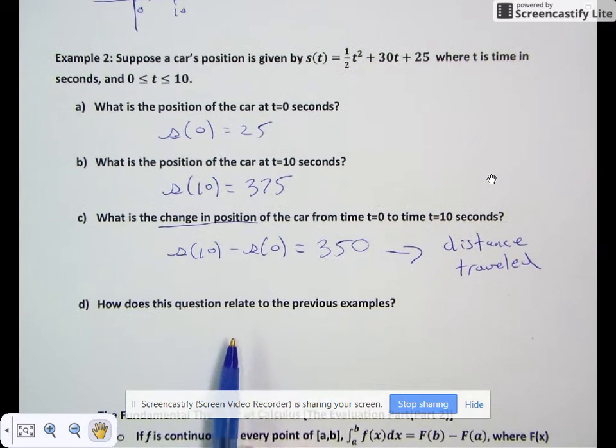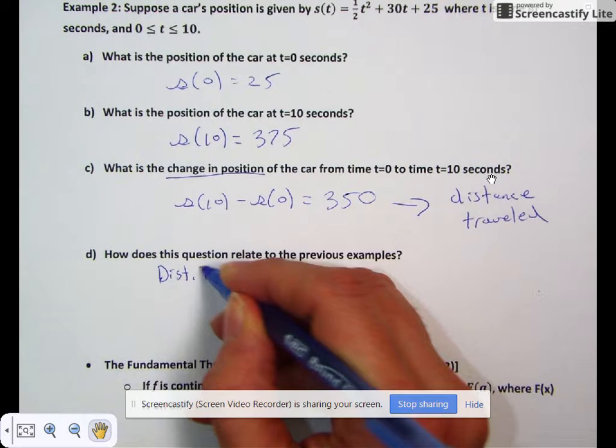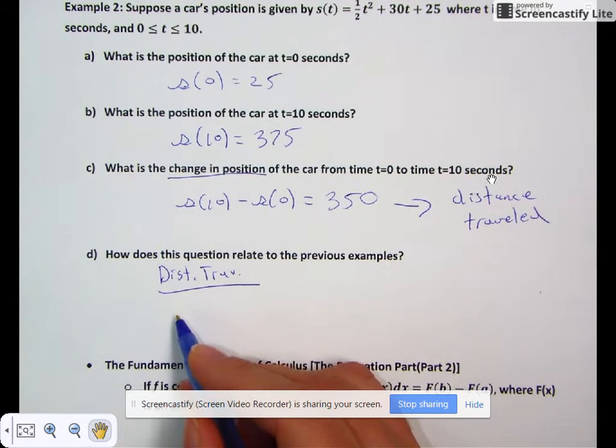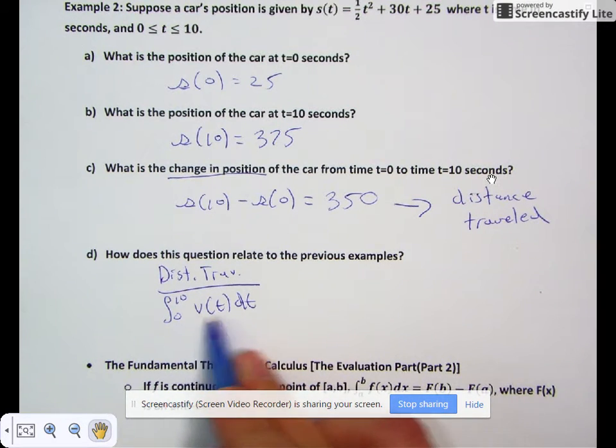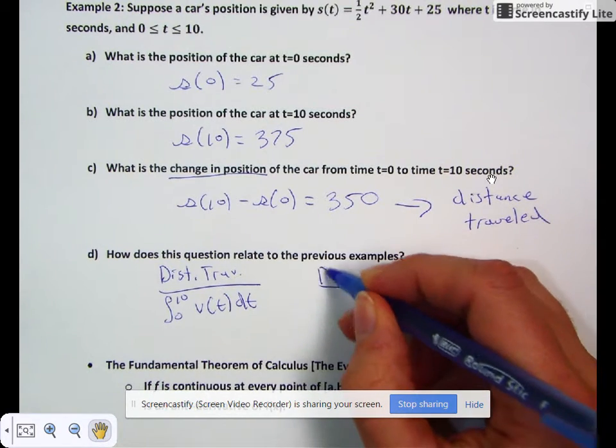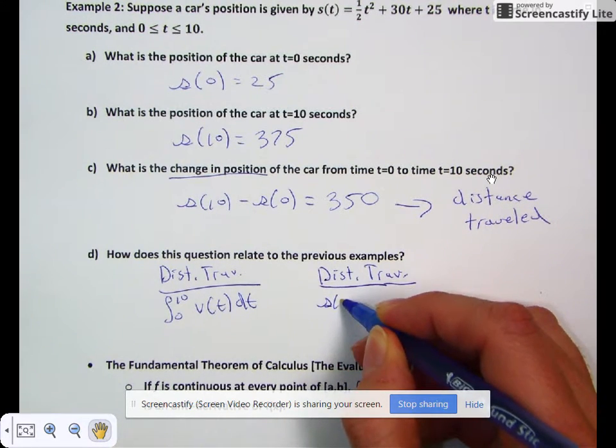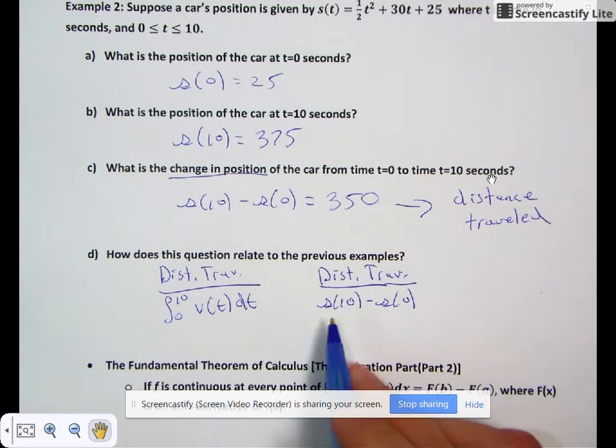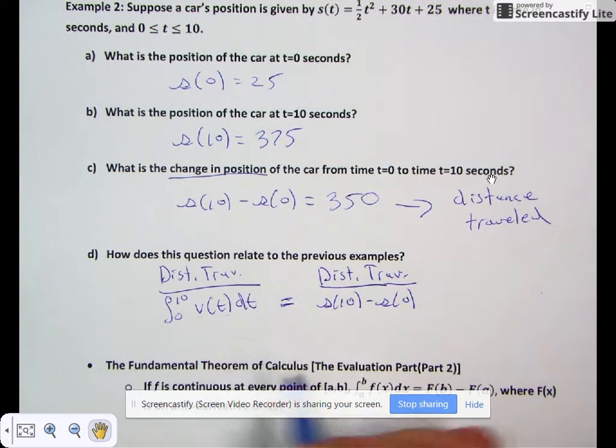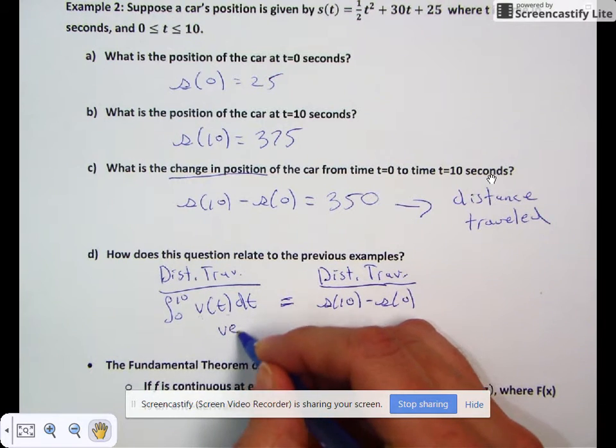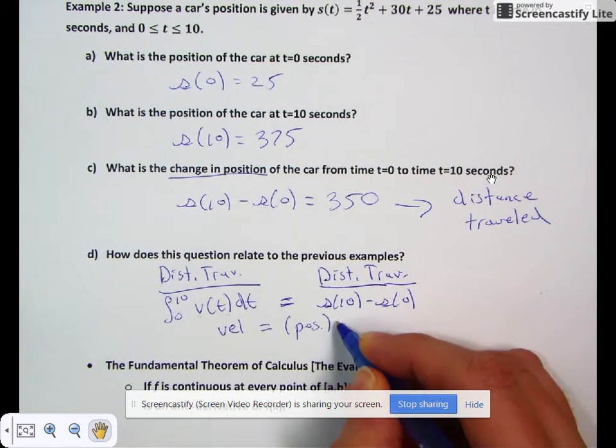How does this question relate to the previous example? In 5.2 we defined distance traveled as the integral from 0 to 10 of v(t) dt—the integral of our velocity function. In this last example, we found distance traveled differently: s(10) - s(0). The first used the velocity function, the second used the position function. These two find the same thing—they're equal. This means the velocity function equals the derivative of the position function.